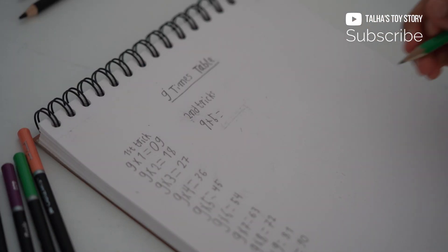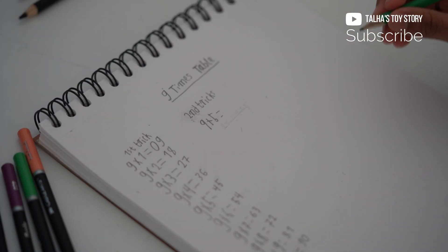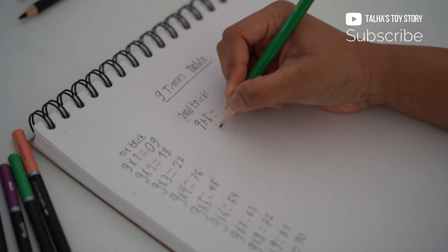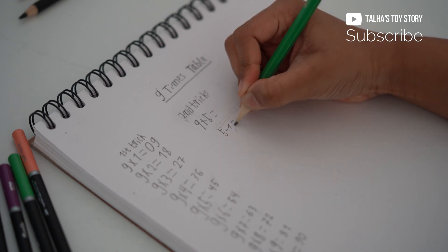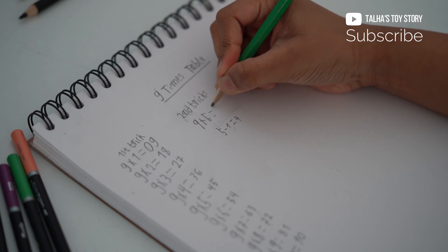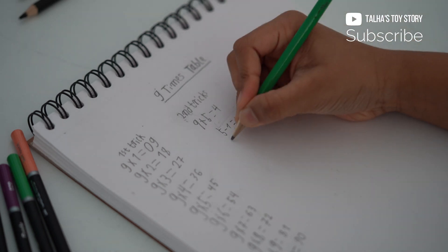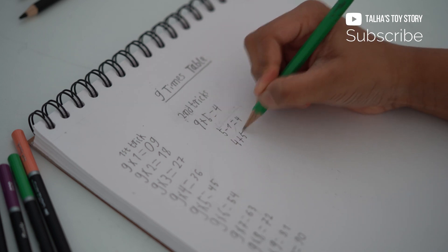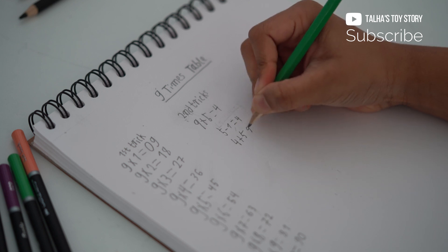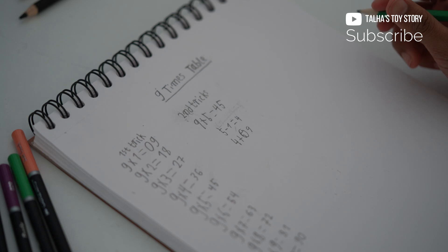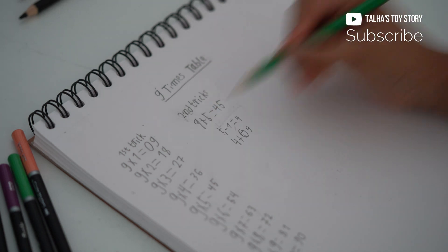Now I'll show you 9×5. For the first trick, we take 5, subtract 1 to get 4. We write 4 here. Now 4 plus what equals 9? That is 5. So we write 5 here. That's our answer.